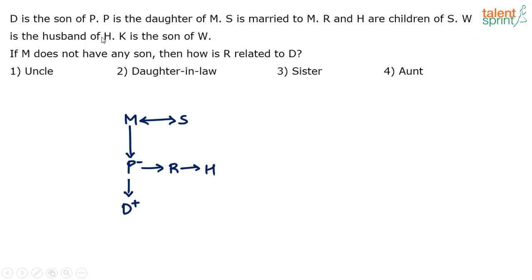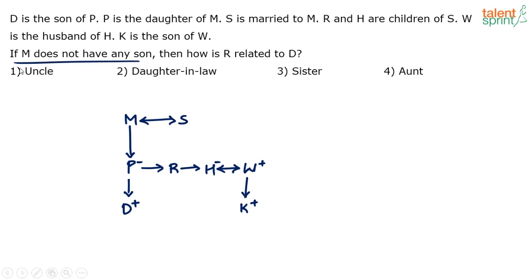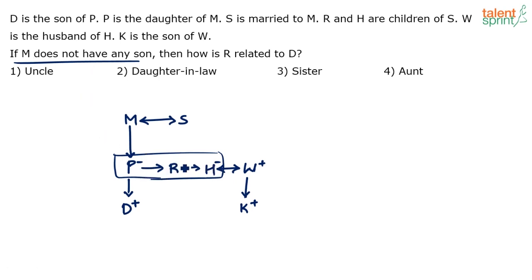W is the husband of H, so W and H are a husband-and-wife couple — W is the husband and obviously H is the wife. K is the son of W. Now the important point: M does not have any son. M has got three children — P, R, and H — and has no son. We already know P and H are daughters. The only question was about the gender of R, but since M has no son, we can conclude that R is also the daughter of M.